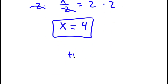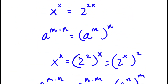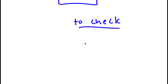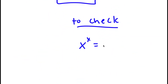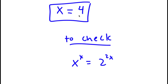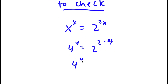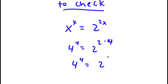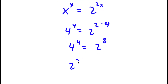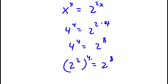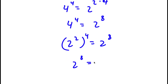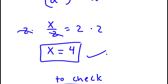To check, my original equation was x to the power of x equals 2 to the power of 2x. With x equals 4, I have 4 to the power of 4 equals 2 to the power of 2 times 4, which is 2 to the power of 8. Since 4 is the same as 2 squared, I have 2 squared to the power of 4 equals 2 to the power of 8. 2 times 4 is 8, so 2 to the power of 8 equals 2 to the power of 8. This checks out, so my solution is correct.